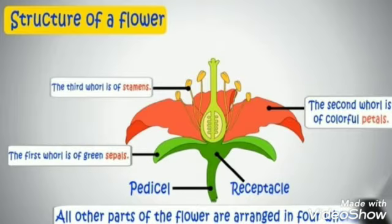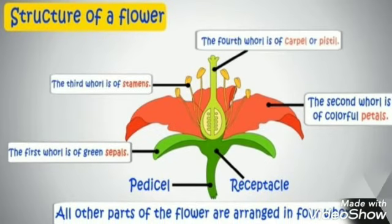Third is the stamen, which is the male reproductive part. And fourth is the carpel or pistil, which is the female reproductive part.